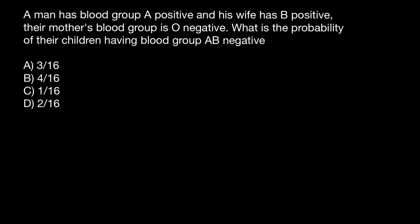Hello and welcome to Nikolai's Genetics Lessons. Today's problem comes from one of my subscribers. A man has blood group A positive, meaning RH positive, and his wife is B positive. Their mothers' blood group is O negative. What is the probability of their children having blood group AB negative?